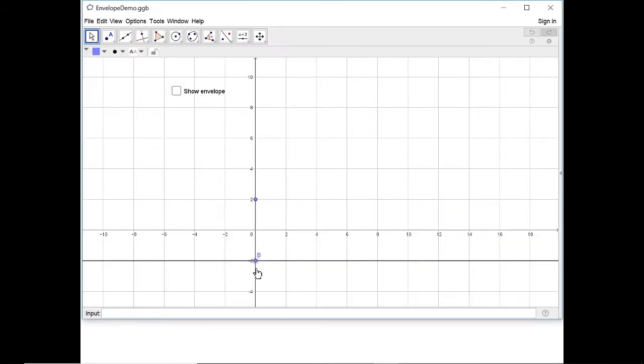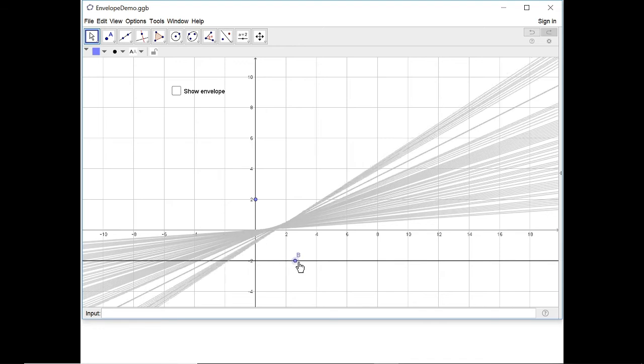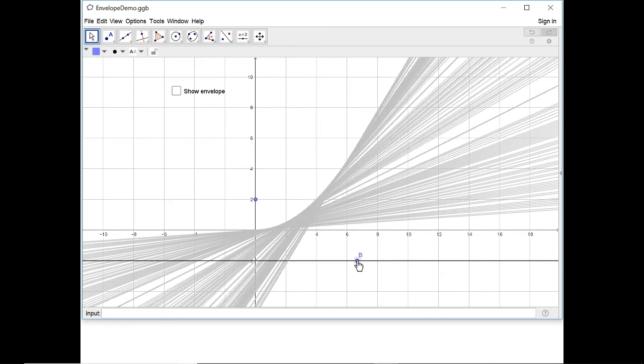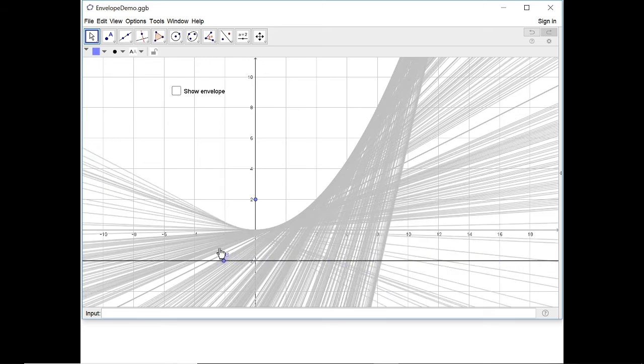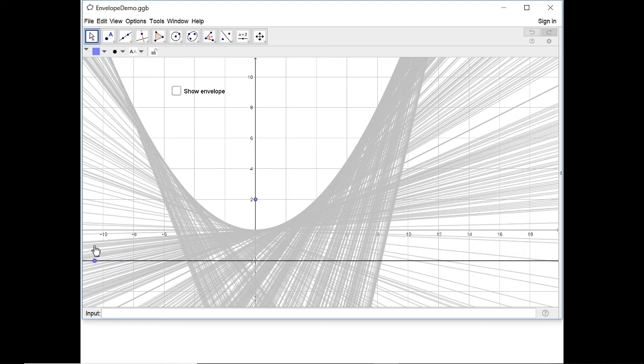Let me show you what this looks like in GeoGebra. So here's my y-axis, which is the vertical axis of my paper, and then this solid line is the bottom edge of the paper, which I've folded up to make my x-axis. Now I can choose any point along this bottom edge and fold it up to the point I've chosen. And this will give the set of lines. You can see I've got the trace turned on here.